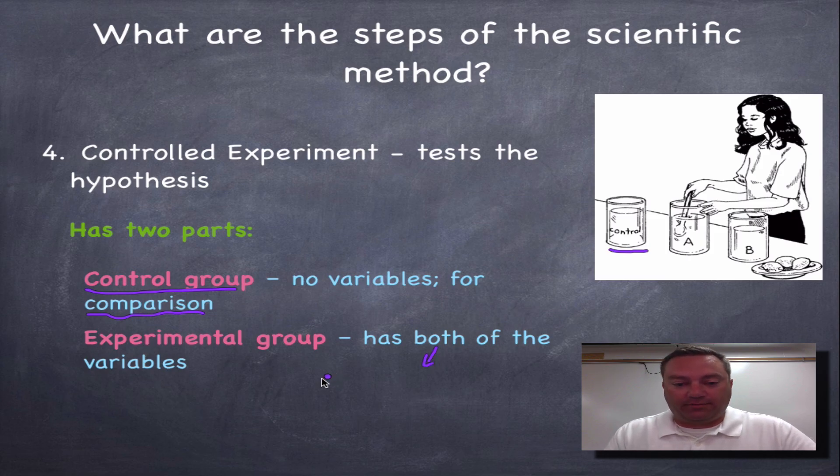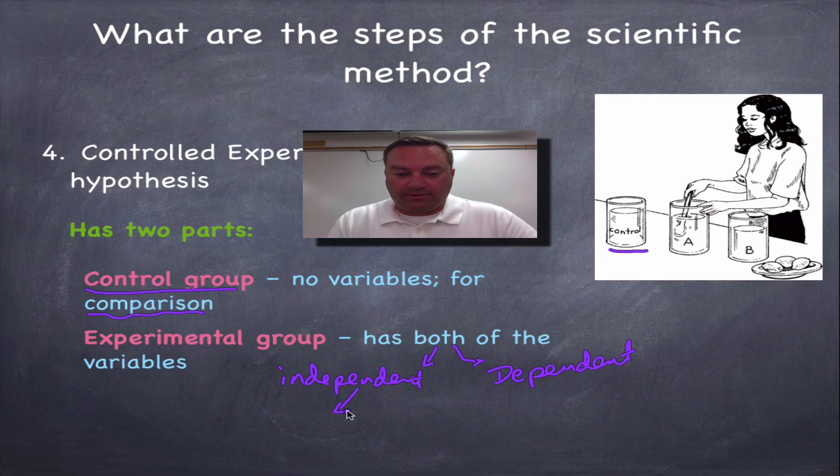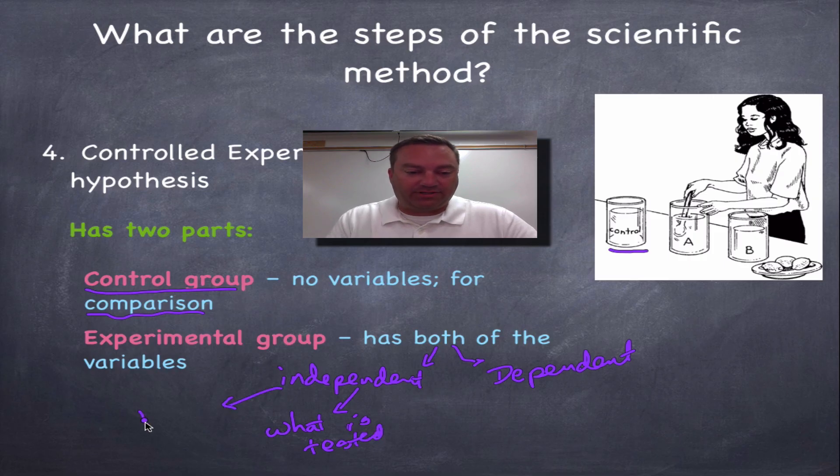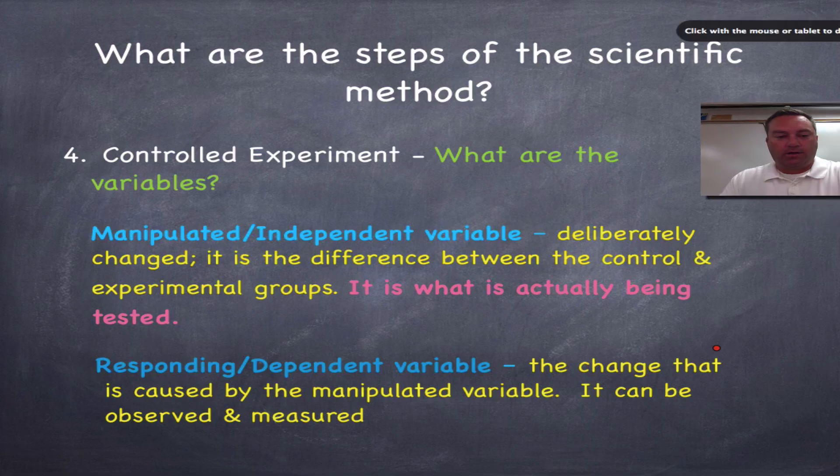The experimental group is going to have both of the variables. And remember, both variables are the independent and the dependent variable. The independent variable, that is what is being tested. And remember, when we write our hypothesis, that's going to be the if part. And then the dependent variable is essentially the data. And remember, in our hypothesis, that was the then part. Now, I went over this in pretty good detail last slide, so I'm going to zip through this one a little bit quicker, but make sure you write all this stuff down.